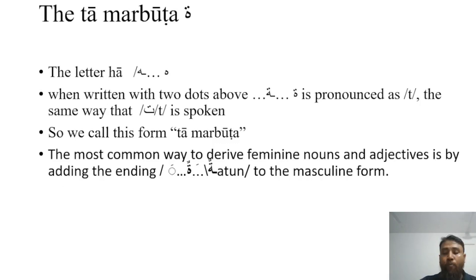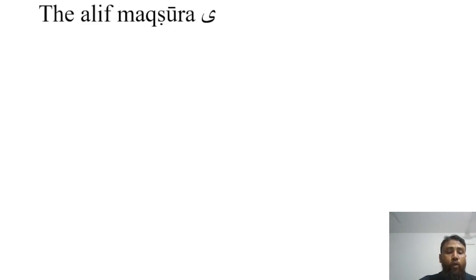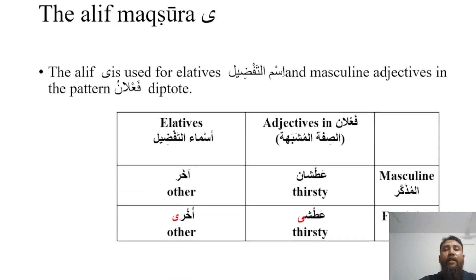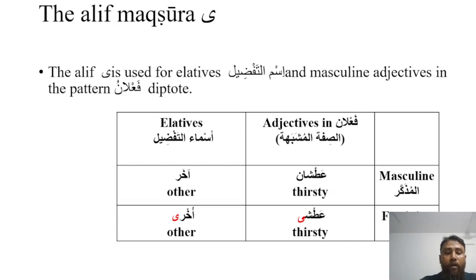The second form is the alif maksura. The alif maksura is used for elatives and masculine adjectives in the pattern of af'al. Here are some examples of elatives and adjectives in this pattern. The masculine word is asanu, meaning 'best'; the feminine word is asaa, also meaning 'best'. The elative is akher, meaning 'other'; and the feminine word is uhra, meaning 'other'.